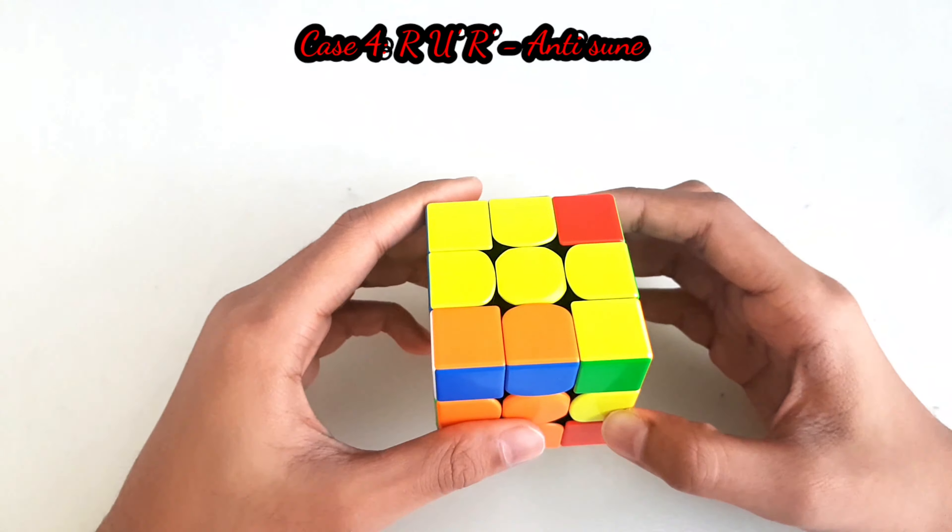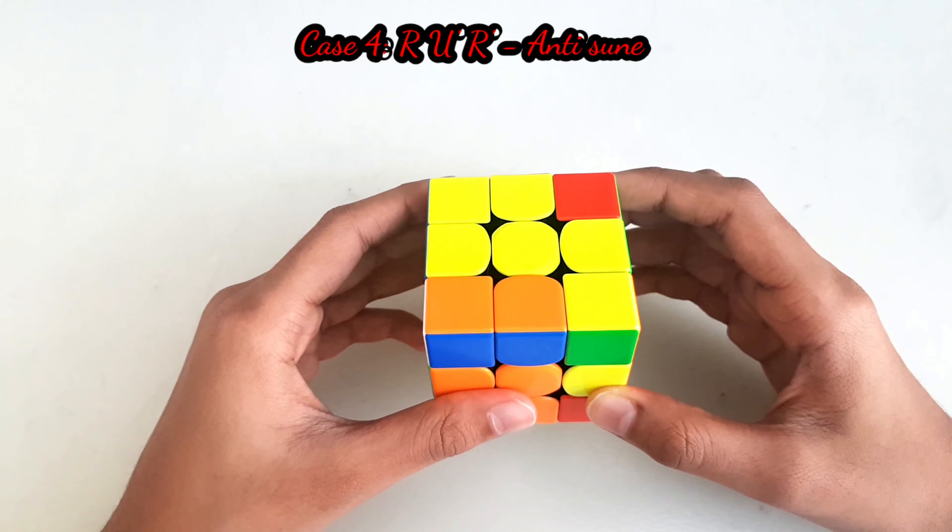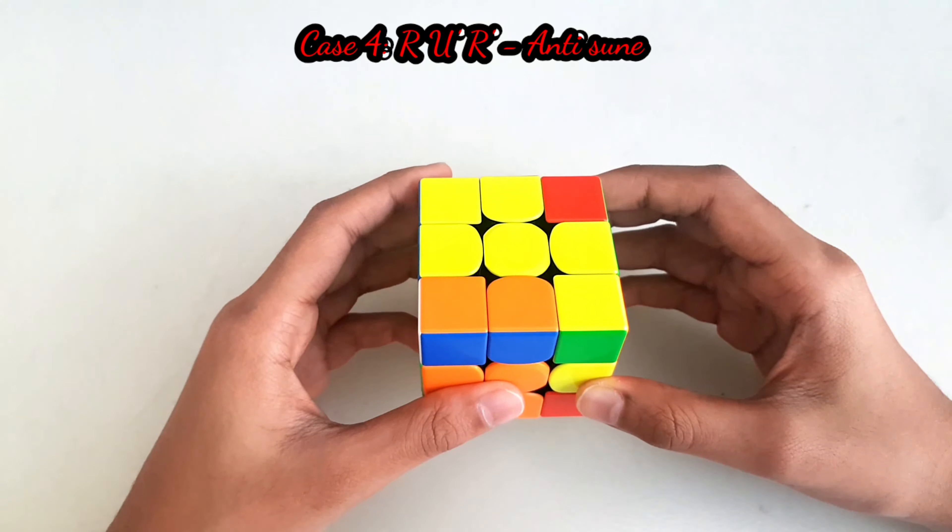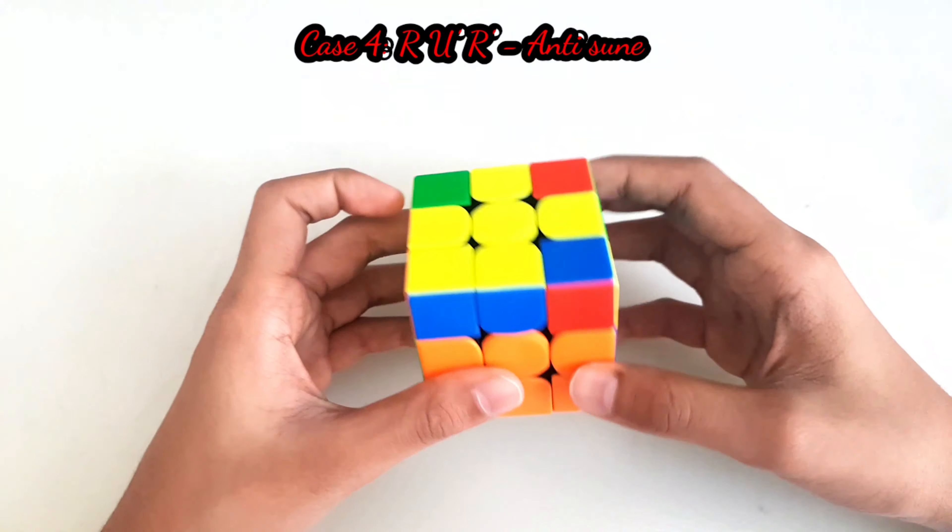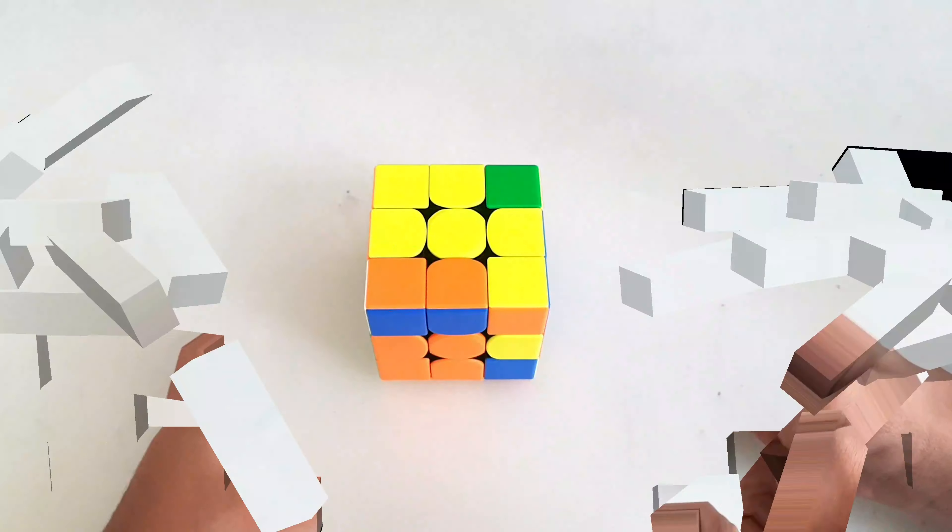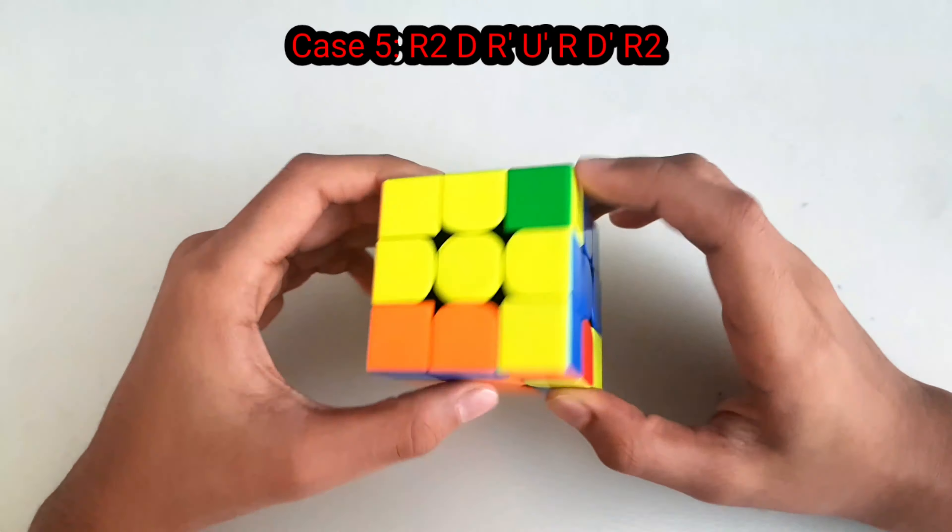The next case is when you have the yellow corner facing towards the right side in the back spot. What you do is...